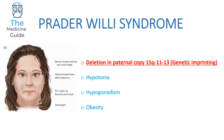Prader-Willi syndrome is caused by a deletion in the paternal copy of chromosome 15q11-13. It's really important to remember it's on the father's side. This type of pathology is described as genetic imprinting. In your SBA, the examiners might describe the answer as 'deletion in paternal copy 15q11-13' or simply as 'genetic imprinting,' so you need to be familiar with both descriptions.